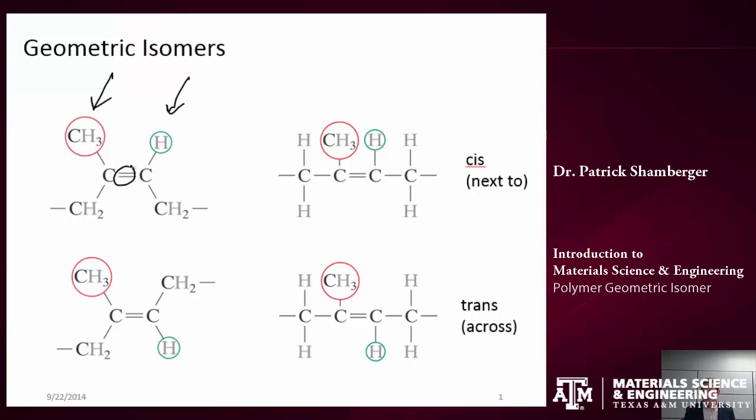Now, you'll note that there is a double bond between those two carbons. And that's really important. It's going to become clear why momentarily. So, we can have two different kinds of arrangements of these side groups. We could have what's called the cis arrangement, whereby the propyl group is next to the hydrogen group. Or we could have the trans arrangement, whereby the propyl group is diagonally across that repeat unit from the hydrogen group.